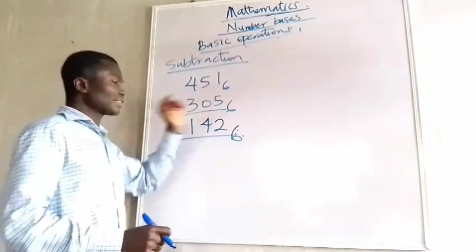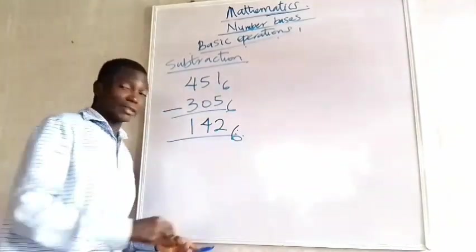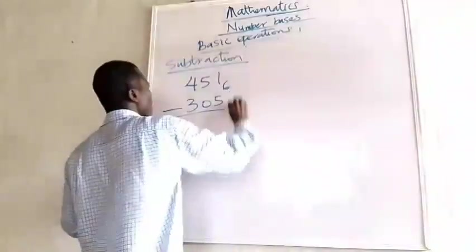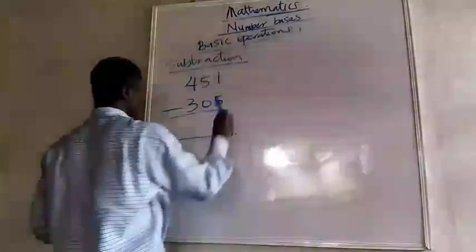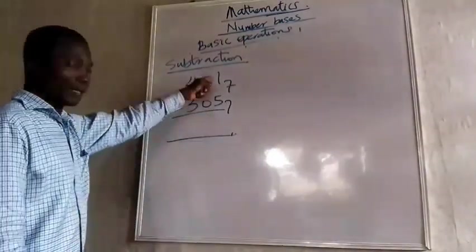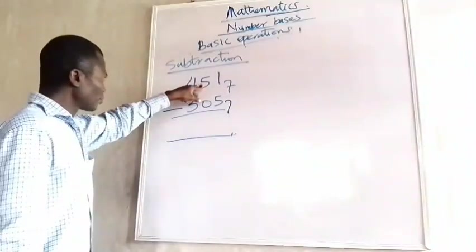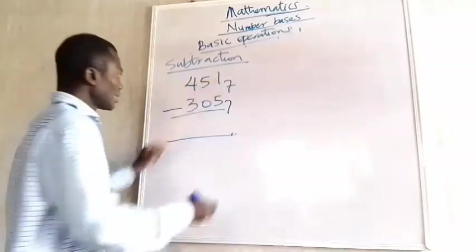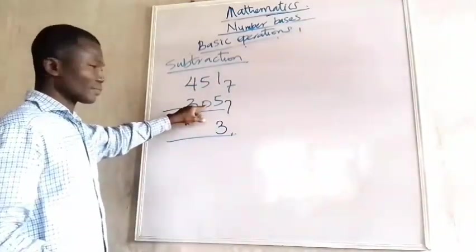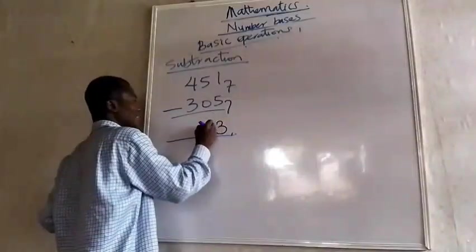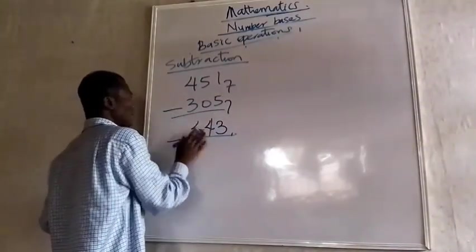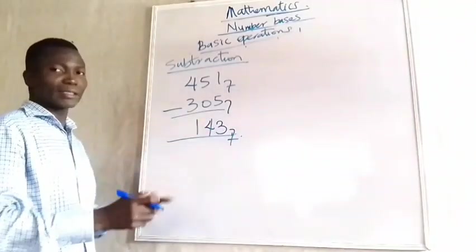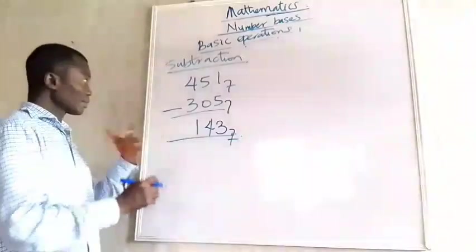Now assume instead this is base 7. What answer do we get? Starting right: 5 from 1 is difficult, so I borrow — in base 7, that borrowed 1 is 7. So 7 plus 1 is 8; 5 from 8 is 3. You can see the answer varies because we are working on different bases. That is what I just wanted to show you.